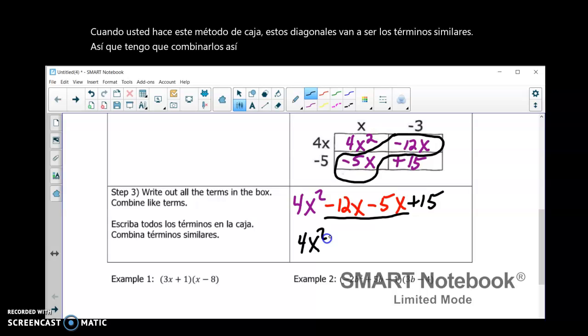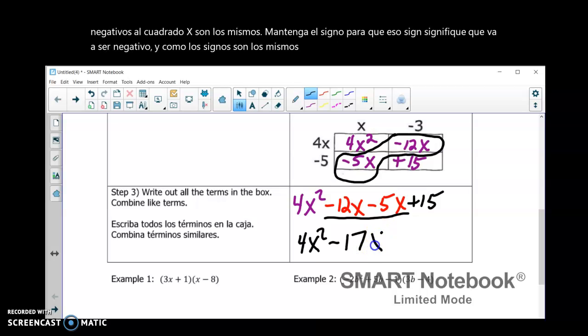So, I bring down my first term, 4x squared. Negative, negative. The signs are the same. Keep the signs. So that means it's going to be negative. Negative, and since the signs are the same, you add them. So, I get 17x.